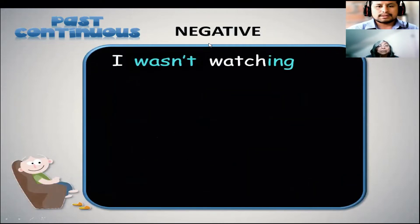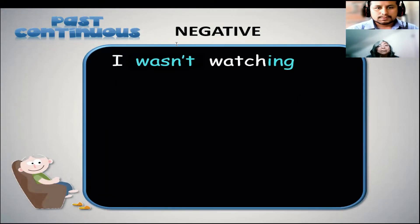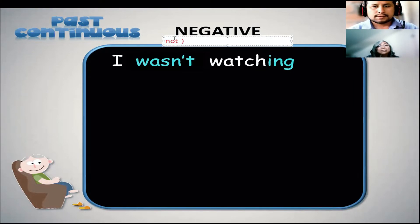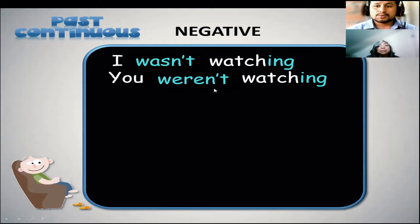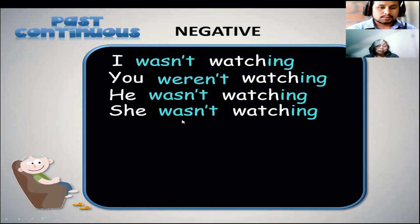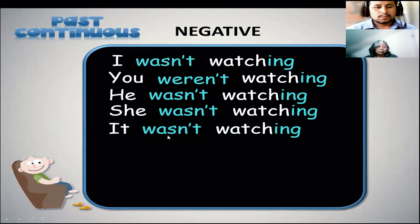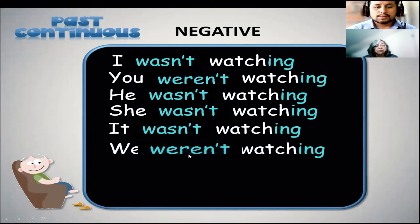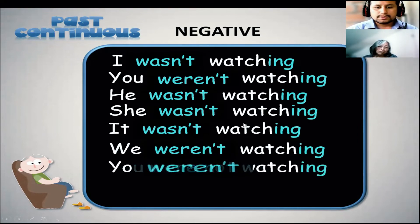But now if we talk about negative words, we have this magic word 'not' to make sentences negative. You would say: I was not — as a contraction, I wasn't. You were not, you weren't watching. He was not, he wasn't watching. She was not, she wasn't watching. It wasn't watching. We weren't watching and you weren't watching.